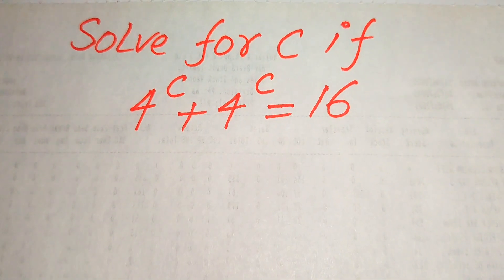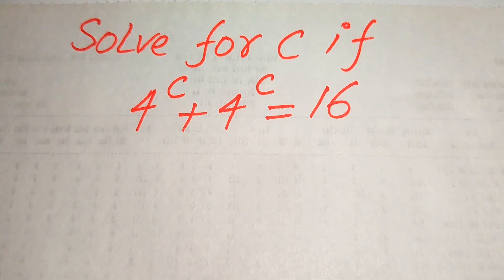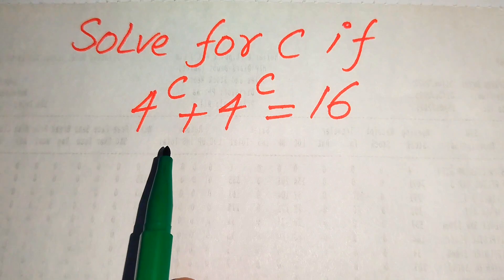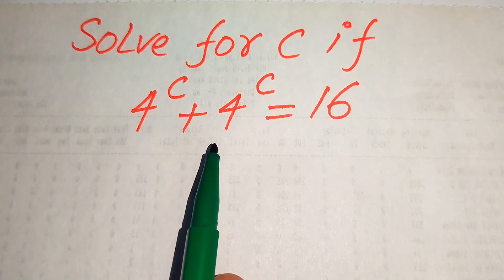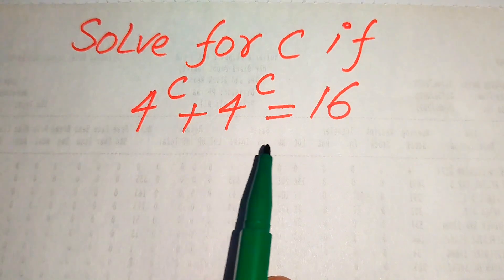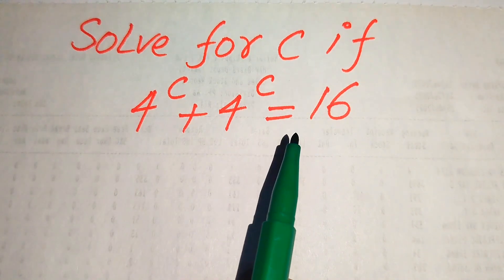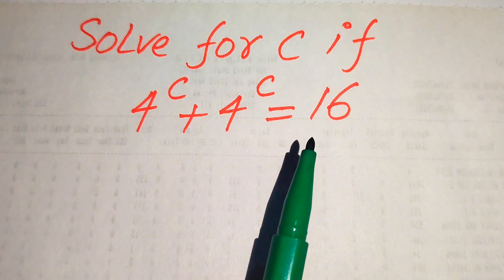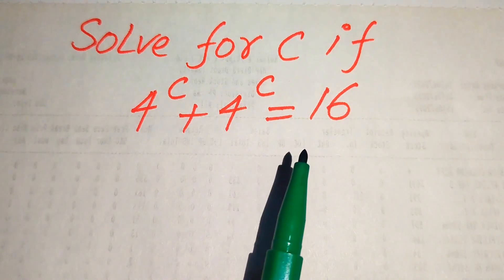Hello everyone, welcome to solve this nice math olympiad algebra problem. We have 4 to the power of c plus 4 to the power of c equals 16, and we solve this problem for the values of c.